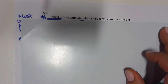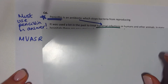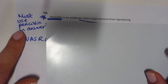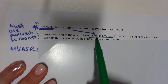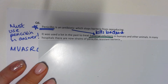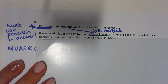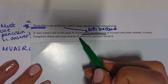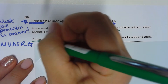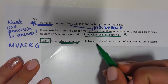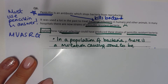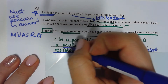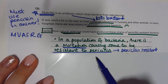Final question — a five or six marker. Penicillin is an antibiotic which stops bacteria from reproducing. Important: use the word penicillin in your answer, not just antibiotics, as it's the specific antibiotic given. It was used a lot in the past to treat bacterial infections because it kills bacteria. In many hospitals there are now strains of penicillin-resistant bacteria. Explain how natural selection has produced these strains — write your key letters on the side.